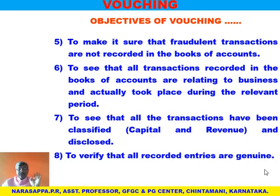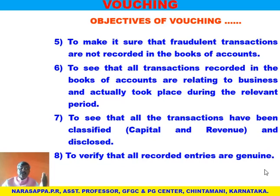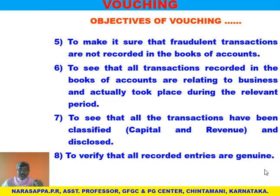Seventh: to see that all the transactions have been classified into revenue and capital and disclosed in the books of accounts. We have two sets of entries — capital and revenue. Capital transactions (capital expenditure, capital income, capital loss) should be separately shown, and revenue incomes, expenses, and losses should be separately shown and classified in the income statement and balance sheet. Eighth: to verify that all the recorded transactions are genuine — if entered transactions are not genuine, they should not be considered for accounting purposes and should be eliminated.